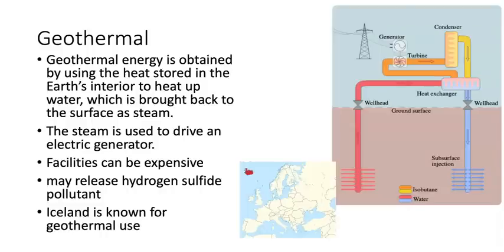Geothermal power uses the heat from the center of the earth to heat water, producing steam that spins a turbine to generate electricity. These plants are best in geologically active areas such as plate boundaries. Iceland is an excellent example — located on a divergent plate boundary, it has abundant tectonic activity making it perfect for geothermal power generation. Downsides include high plant costs and the possibility of hydrogen sulfide pollution released from drilling into the earth.